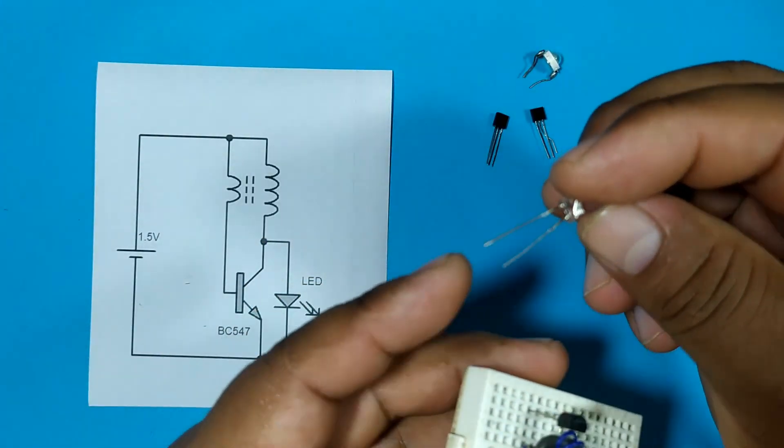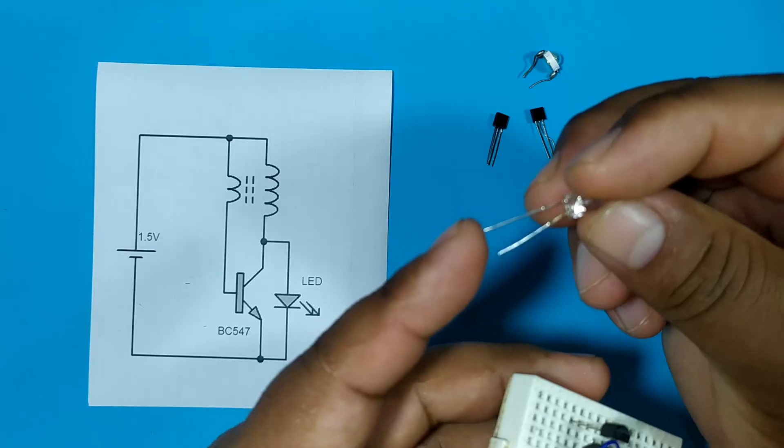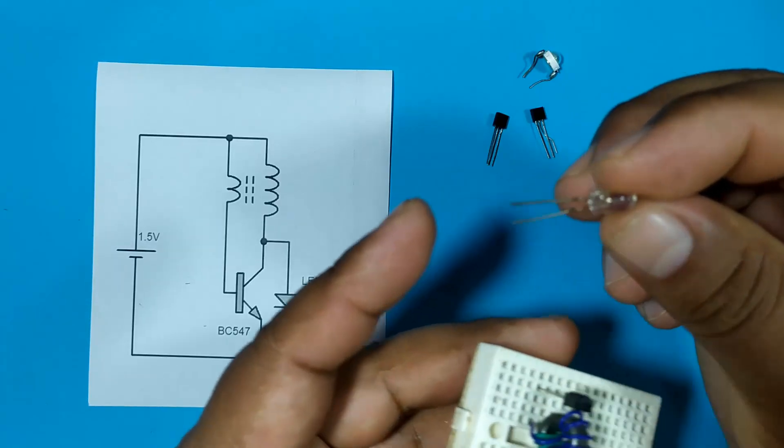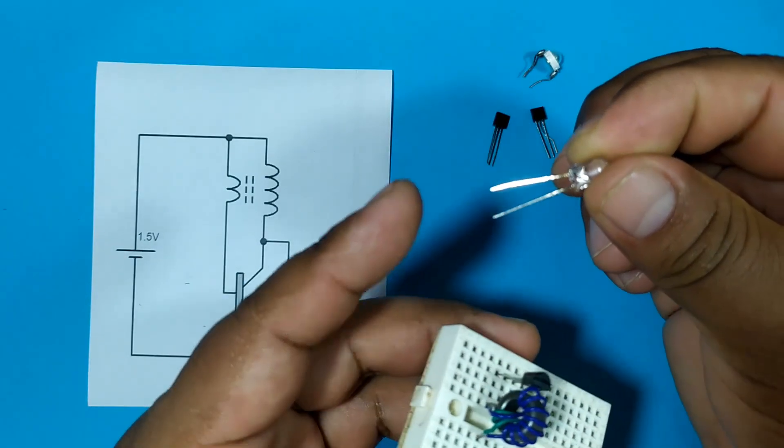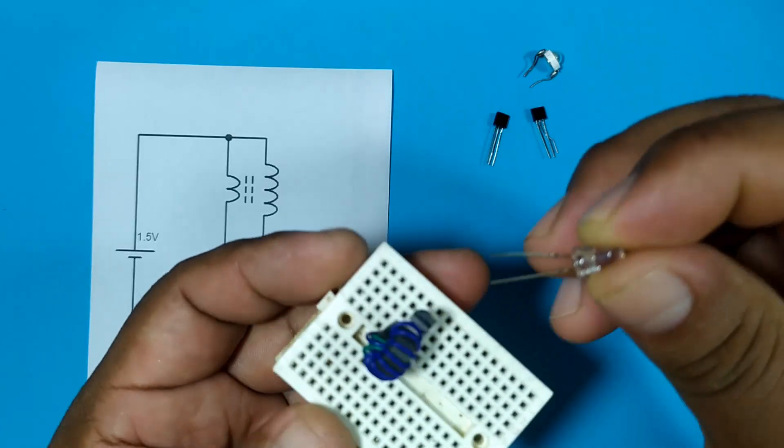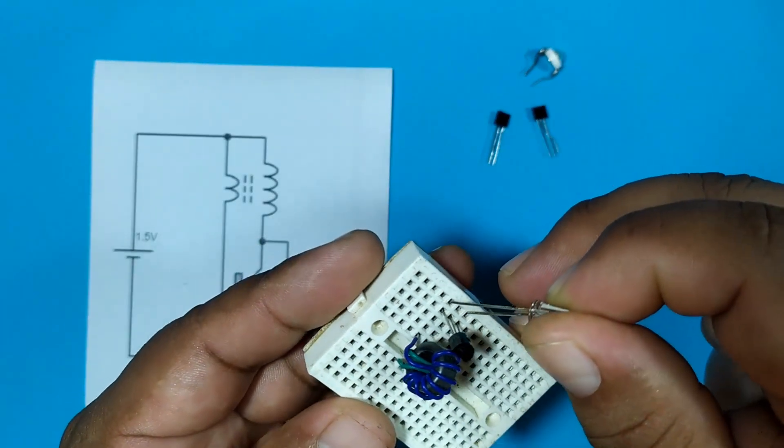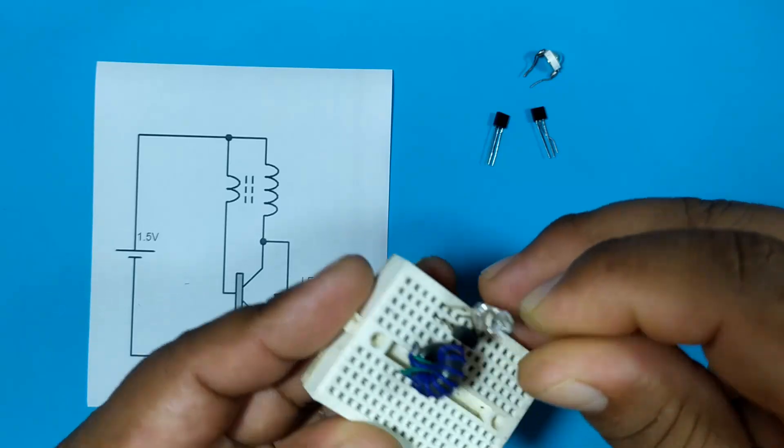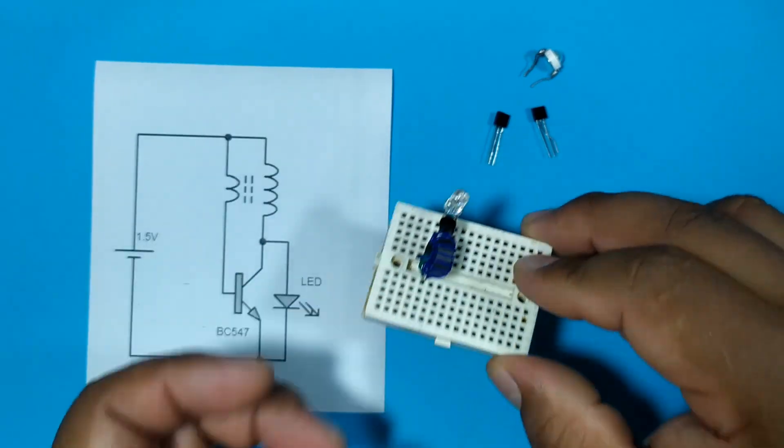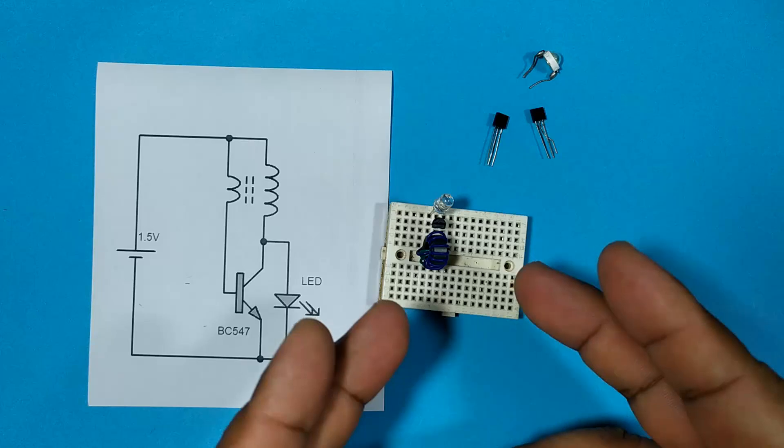In the case of the LED, don't forget that the longest pin is positive and the shortest pin is negative. So negative, positive, negative. And now we have to feed it with a battery.